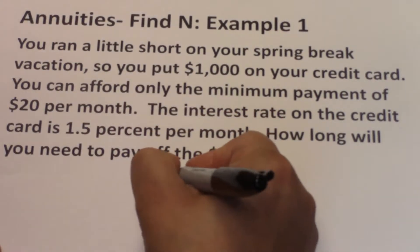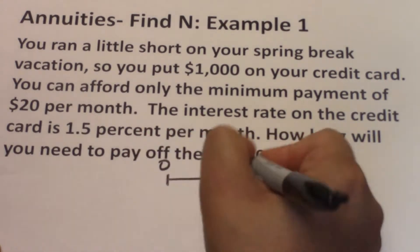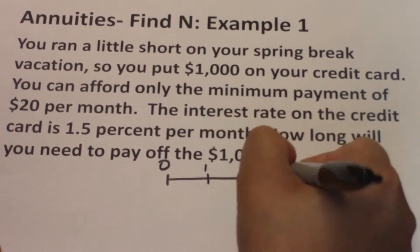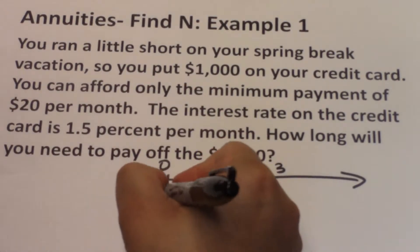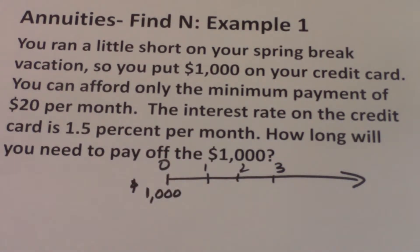So if you were to draw the timeline, we have time zero and then we have one, two, three, four, until the end of the timeline. At time zero — so today — you're charged $1,000 on your credit card. This would be a cash inflow to you today. The credit card company paid for whatever you wanted to buy on your behalf, so the $1,000 is a cash inflow to you today.